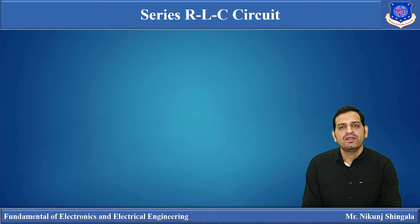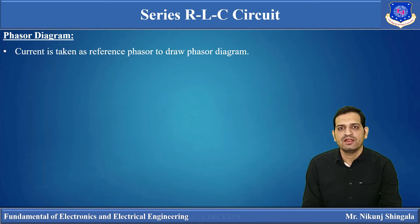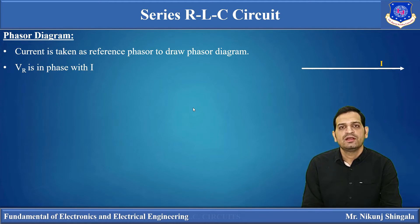So let us discuss the phasor diagram of the series RLC circuit. Since current is common through all three elements it is taken as the reference phasor. Current is represented by a straight-line phasor passing through the origin — a phasor is just a representation of an alternating quantity that makes representation very easy. Now Vr is the voltage across R; for a resistor, voltage and current are in phase, so Vr is in the same direction as I with a phase difference of zero.